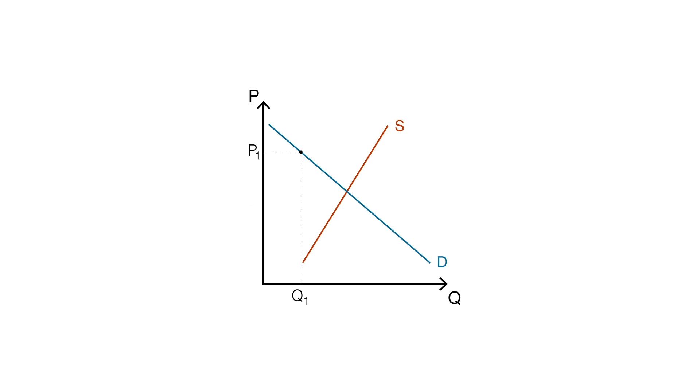When farmers realize how high prices are, they'll plant more in order to supply more the following year. However, supply is so high the following year, at Q2, that prices decrease to P2.